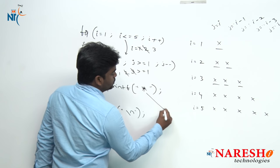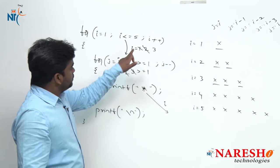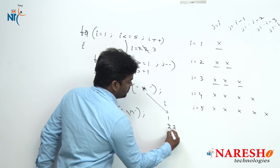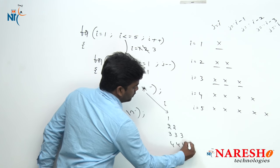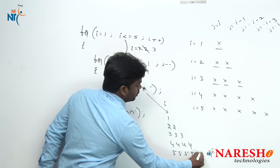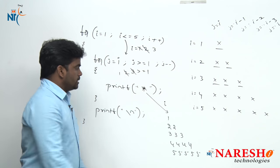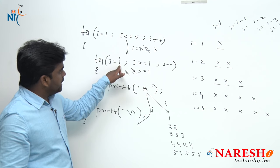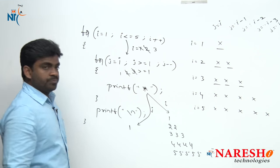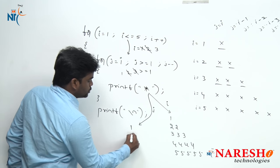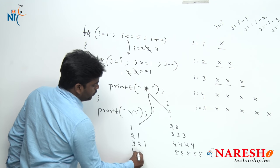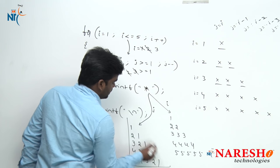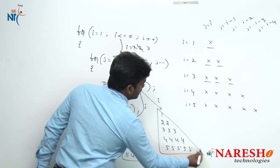Suppose if you are printing i value — in the first case i value is 1, so 1 time 1. In the second case i value 2, so 2 times 2. Then 3 times 3, 4 times 4, 5 times 5 — it will print. This logic also you can write to print this pattern. Suppose if I am printing j value, then what pattern will it print? First j value starts with 1, so 1 it will print once. Next j value starts with 2: values 2, 1. Then 3, 2, 1. Then 4, 3, 2, 1. Then 5, 4, 3, 2, 1. This is the pattern it will print. If you print i value, this other pattern it will print.